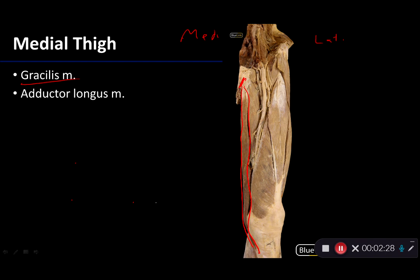The gracilis muscle, when active, is an adductor — an adductor of the hip — so that is going to swing the hip toward the midline. It is also a flexor of the knee. For our purposes it's a useful landmark because it is the most medial of all the medial thigh muscles, so everything else we're looking at is going to be lateral to the gracilis.